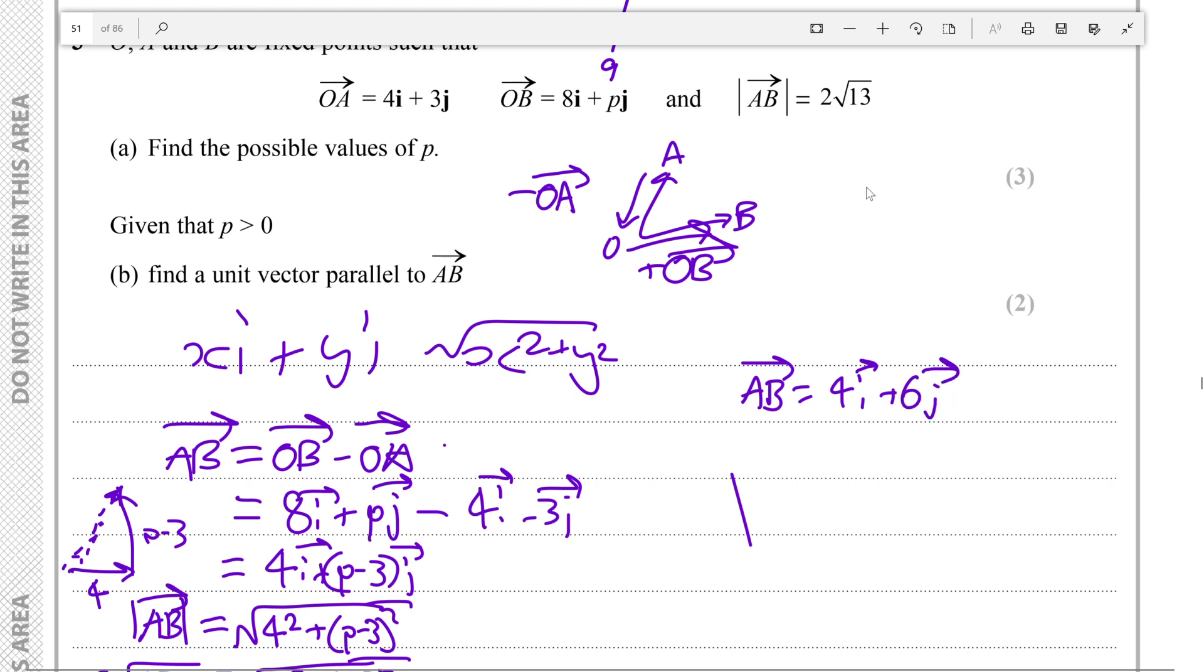And then we divide by 2 root 13, that's the magnitude of our original vector. So AB divided by 2 root 13 is equal to 4 over 2 root 13 i plus 6 over 2 root 13 j.